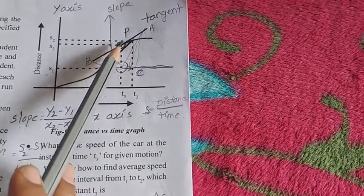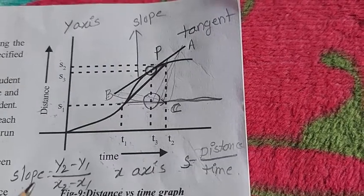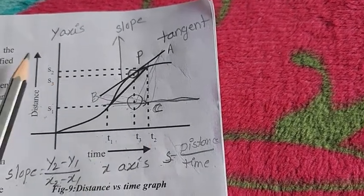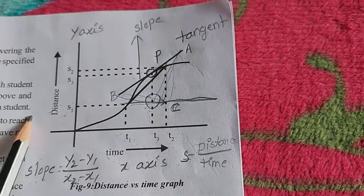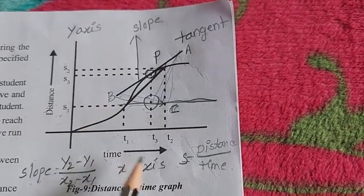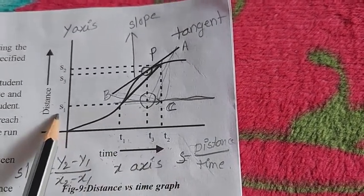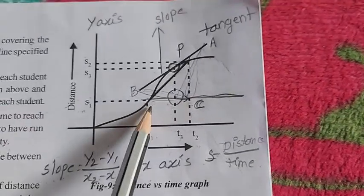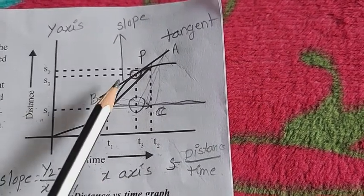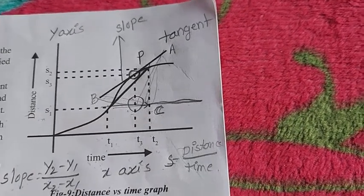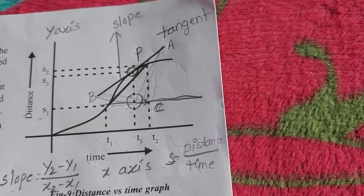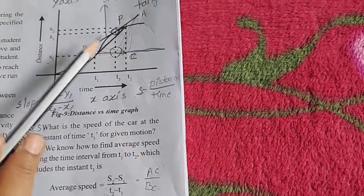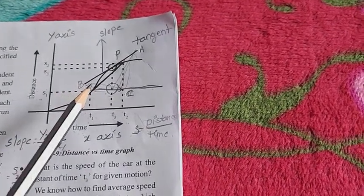So, in the distance-versus-time graph, the x-axis is time and the y-axis is distance, with time intervals t₁ and t₂ and distances s₁ and s₂. We draw tangent AB at the point and calculate the slope: average speed = (s₂ − s₁) / (t₂ − t₁) = AC / BC from the triangle ABC.